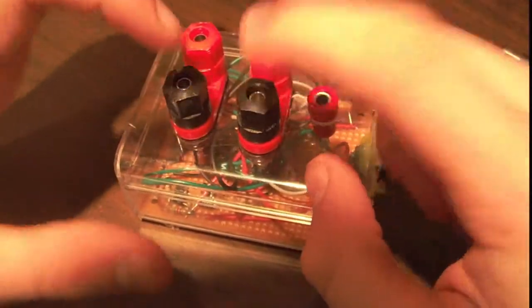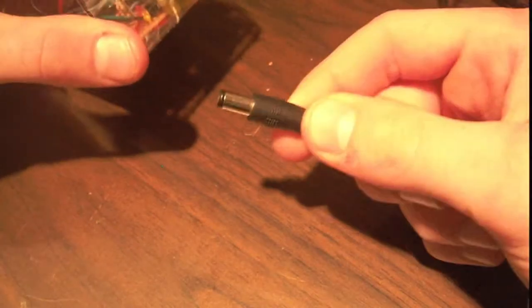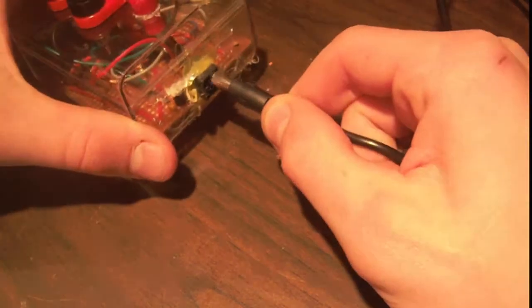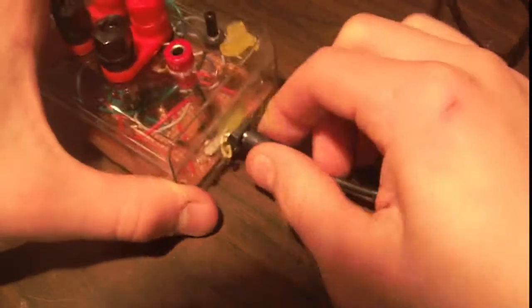And all the grounds are connected, so this ground is connected to the ground at the input. It just takes regular DC. I have it powering 12 volts. You can use 9 volts. I have my cheap oscilloscope here. I am working on getting the replacement, but it might be a while.